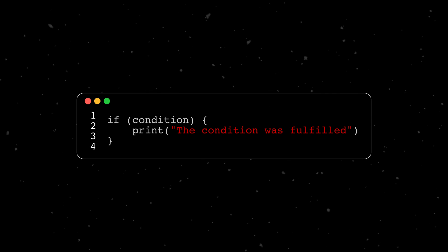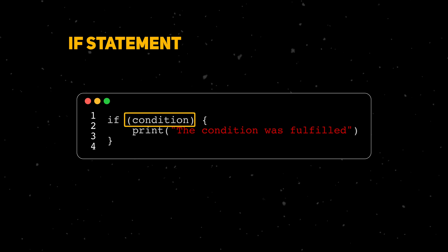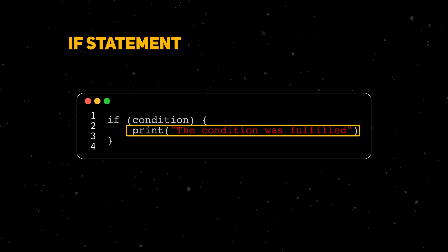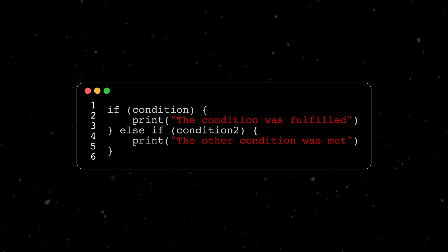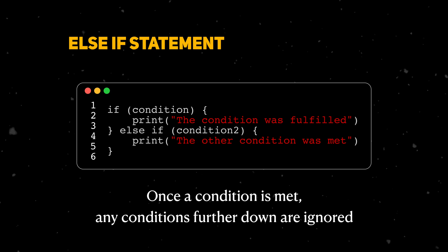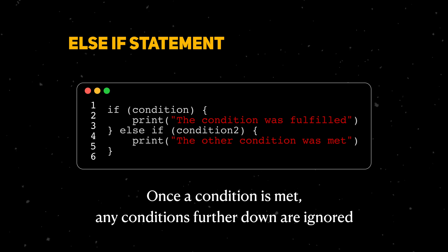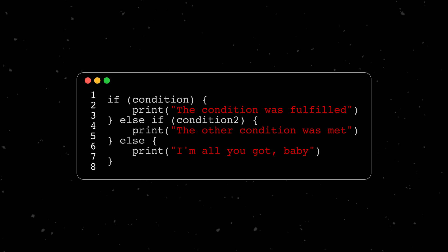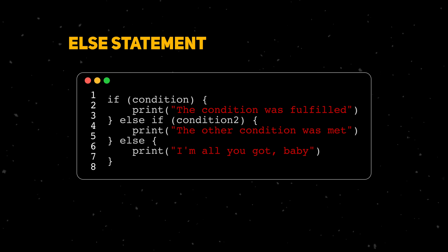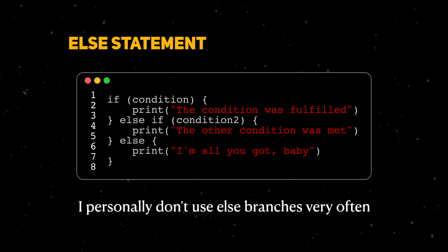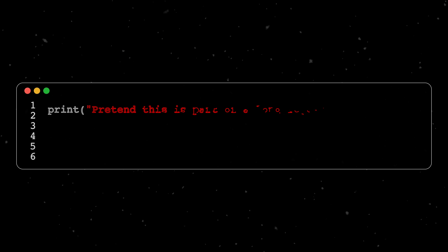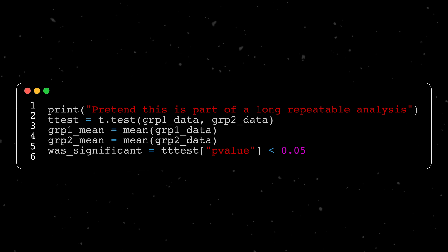There will be times when you need to run code in some situations but not others. For this we use control flow. Like many other languages, R implements control flow through an if statement. If the condition following an if statement is true, then the code within the brackets will run; otherwise it will be ignored. You can add additional conditions by adding an else if branch — the order of these conditions matters, since once a condition is met the ones further down are not checked. Finally, you can specify a chunk of code to run if none of the conditions are true by adding an else branch.